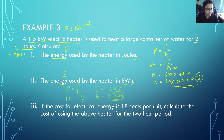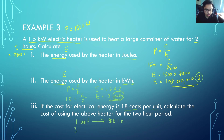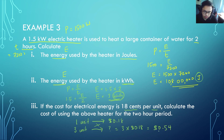If the cost for electrical energy is 18 cents per unit — remember one unit equals one kilowatt hour — calculate the cost of using the heater for the two-hour period. The heater used 3 kilowatt hours, which is 3 units. At 0.18 dollars per unit, 3 times 0.18 equals 0.54 dollars, so using the electric heater for two hours costs about 54 cents.